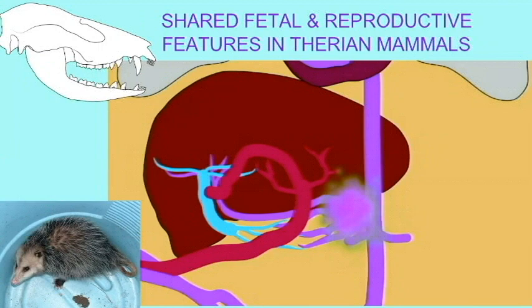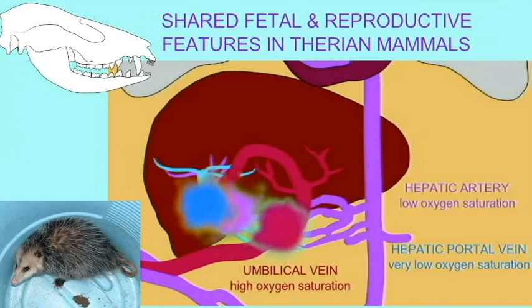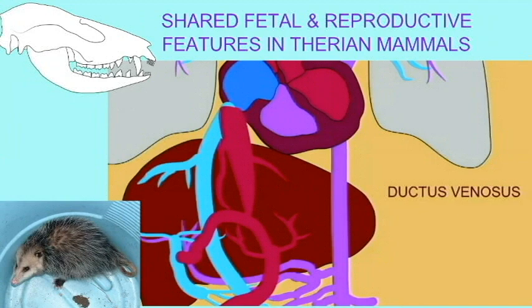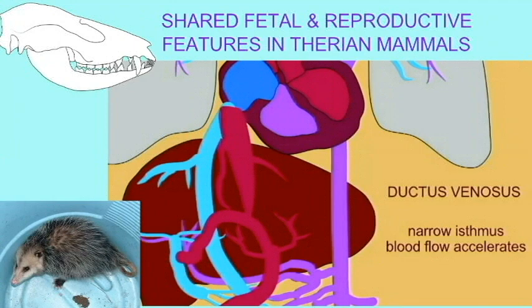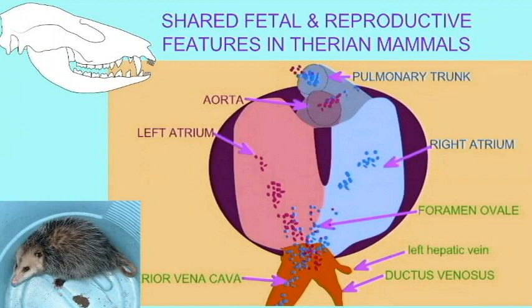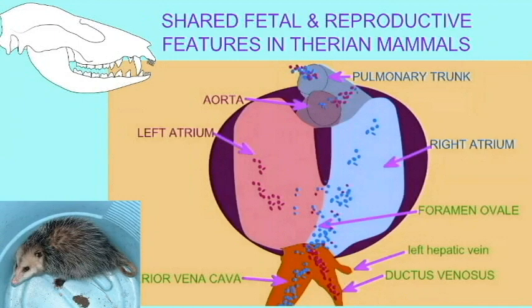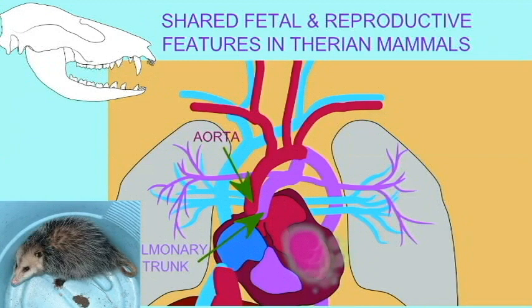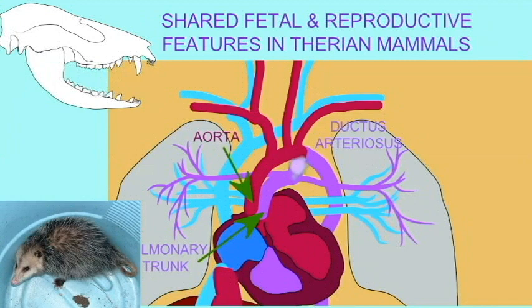A number of the physiological mechanisms which allow this live birth are shared in all Therian mammals. For example, fetal circulation was modified in ancestral Therian mammals, so that the placenta is the source of oxygen. Embryos send oxygenated blood through an umbilical vein through the liver to reach the inferior vena cava, and deoxygenated blood to the placenta through umbilical arteries. Therian mammals also divert blood away from the lungs because an opening known as the foramen ovale diverts blood from the right atrium to the left atrium. These aspects of fetal circulation are shared in Therians.